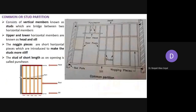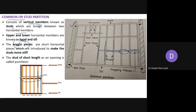The common or stud partition consists of a complete timber framework with vertical members. As you can see in this figure, these vertical members are called studs, and they bridge two horizontal members. The short horizontal pieces between the studs are called nogging pieces, which are fixed to the studs. The whole framework is fixed between two sidewalls.